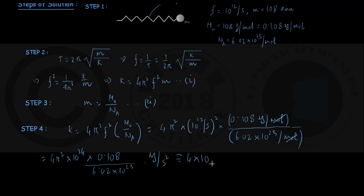And then approximating it numerically, 4 into pi square is approximately 10, into 10 to the power 23 cancelling out, making it simply 10. So I have got 10 here in numerator, we can write 0.108 as 10.8 into 10 to the power minus 2, divided by 6.02 kg per second square, which is same as kg meter per second square per meter, same thing as Newton per meter.